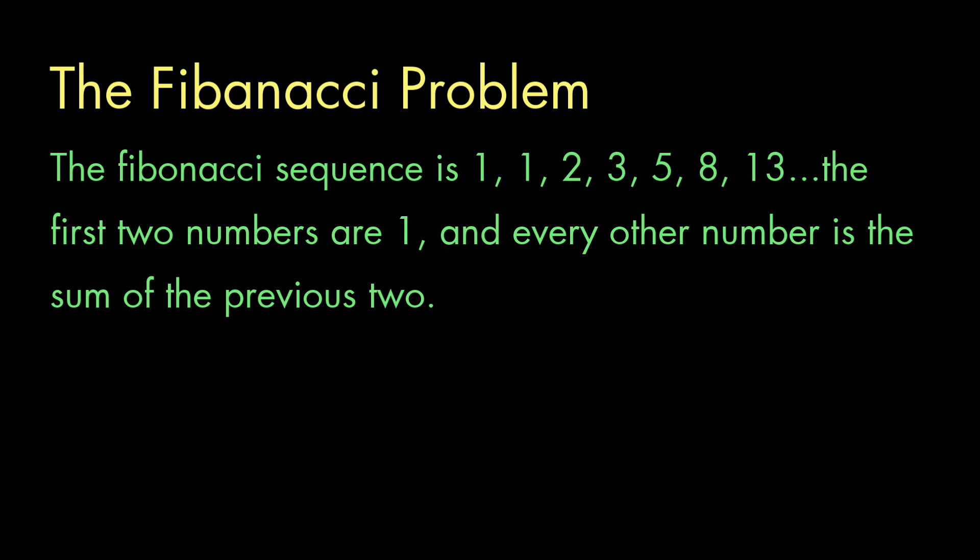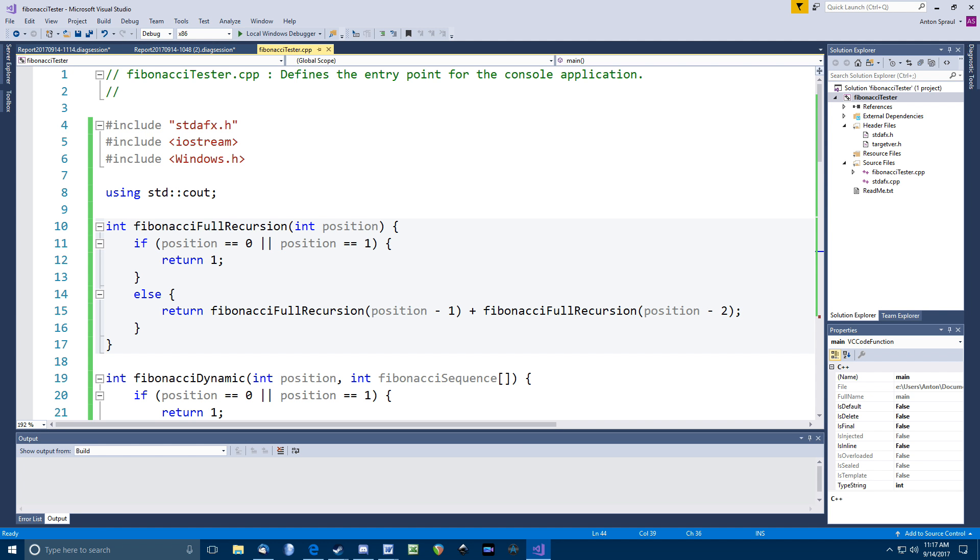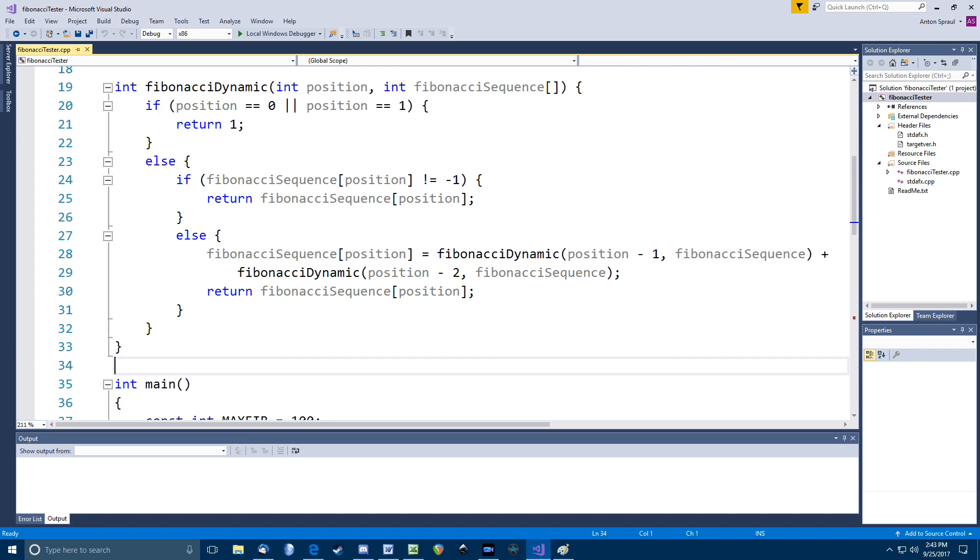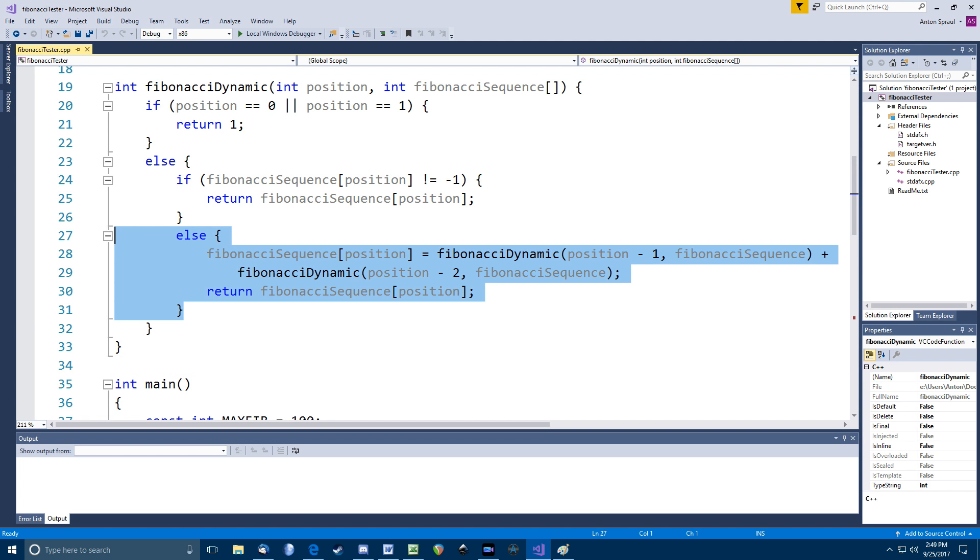Consider the Fibonacci problem we discussed in a previous video. Here's the basic recursive implementation, which has terrible efficiency. I'm going to go through this kind of fast, so refer to the previous video if you need more info about this problem and its solution. Now, here's the top-down dynamic programming version we developed already. It's basically the same solution, except that we're storing each intermediate value as we compute it, and using those pre-computed values whenever we can.